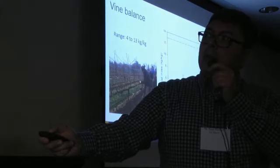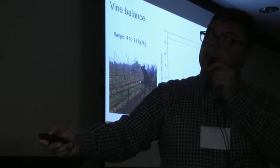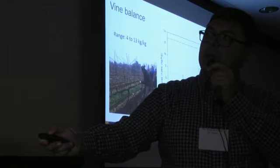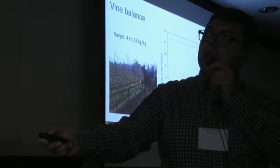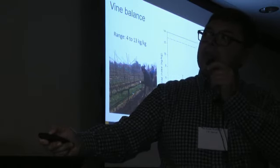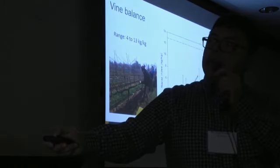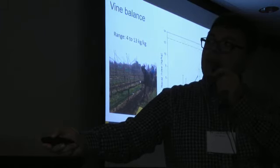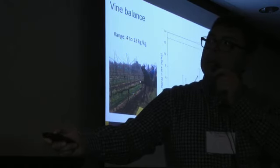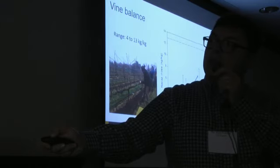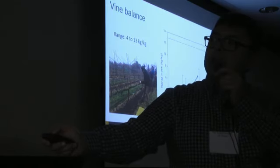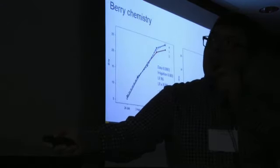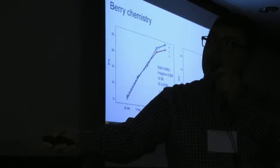Vine balance is a big topic we'll cover later in the week. The ideal range is a fruit weight to pruning weight ratio of 4 to 13. In southerly regions like Kern County, Fresno, and Madera, we can go up to a crop load index of 13. In our leaf removal and irrigation trials, we saw an interaction: with pre-bloom treatment, increasing applied water invigorated the vine and produced a higher crop load index. Similarly with post-fruit set, applying more water increased vigor. Applied water amounts were more effective overall.